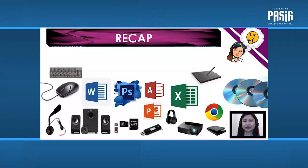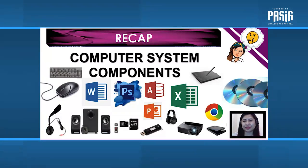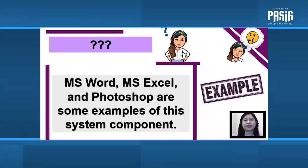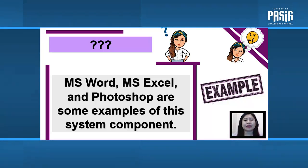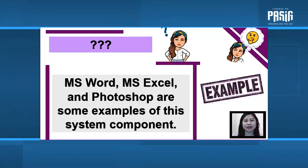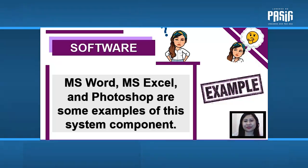Before we proceed with our new lesson, let's have a recap of the computer system components. A statement will be given in each slide. All you have to do is to identify if what is being described is hardware or software. As an example, MS Word, MS Excel, and Photoshop are some examples of this system component — hardware or software? The answer is software. Are you ready? Let's begin.